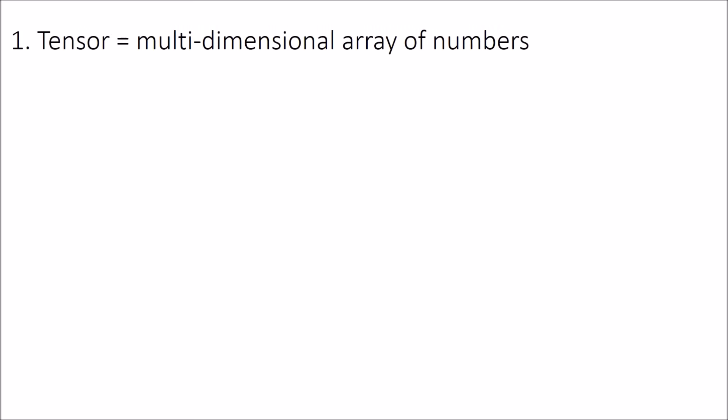Here's a first attempt at a definition for tensors. A tensor is a multi-dimensional array of numbers. And by array I basically just mean grid, so a grid of numbers.